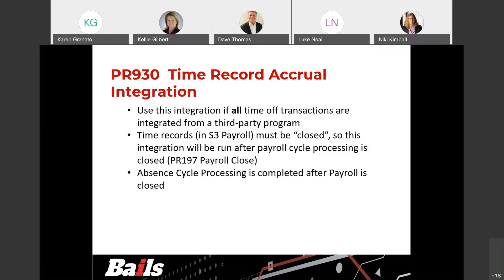You go through and run all your payroll processes — your time records through earnings and deduction calculations, all the way through your payroll close. Then you use this program to take the closed absence records, put them over to GHR absence management for processing, and then process absence management. The difference between the PR930 and the PR931 is the status of your time records.